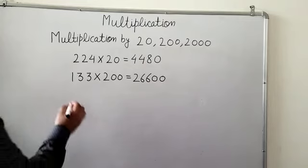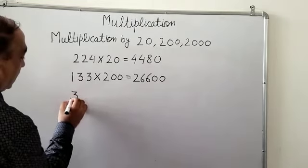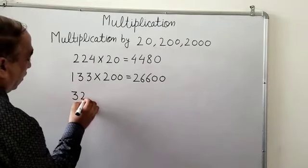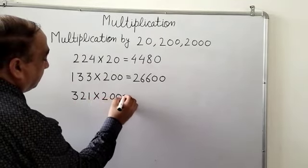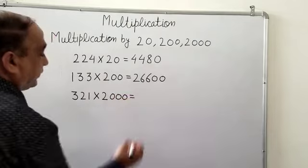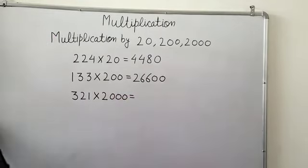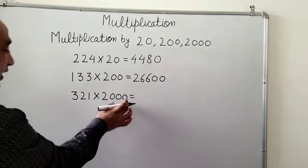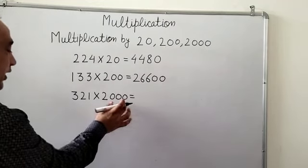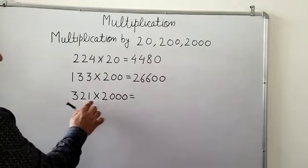I am taking one more example, 321 multiplied by 2000. Again, on the same pattern, you can find the answer directly. Leave these three 0s and multiply 321 by 2.